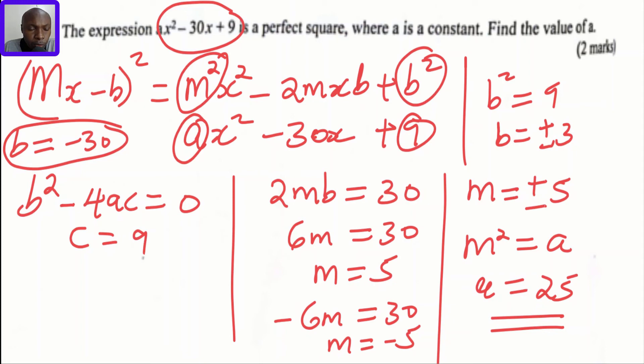If we substitute these values in this equation, we shall get the value of a. So b squared, which is (-30)², minus 4 times a times 9 should give 0. This gives 900 - 36a = 0. When you work out the value of a, you'll get a as 25.